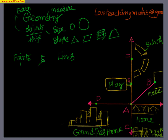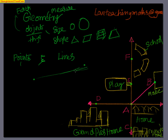Suppose I have a point here and I have another point somewhere else in this plane. If I have two points, I can join them and create a line. Any two points, you can create a line.